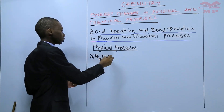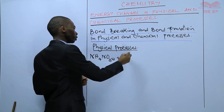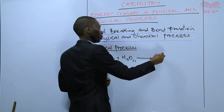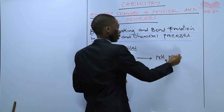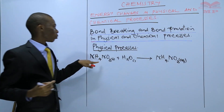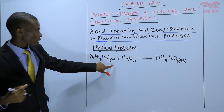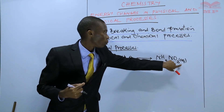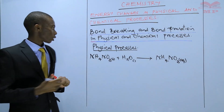Ammonium nitrate is a solid. When you dissolve it in water, you get ammonium nitrate solution. So this is ammonium nitrate, and water is a liquid, and then you get aqueous ammonium nitrate, which is a solution.